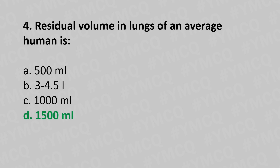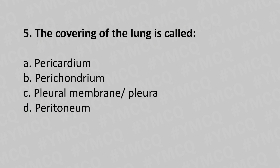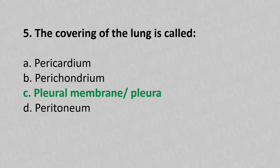Now let's move to question number five. The covering of the lung is called: option a, pericardium; option b, perichondrium; option c, pleural membrane or pleura; option d, peritoneum. And the answer is option c, pleural membrane or pleura.